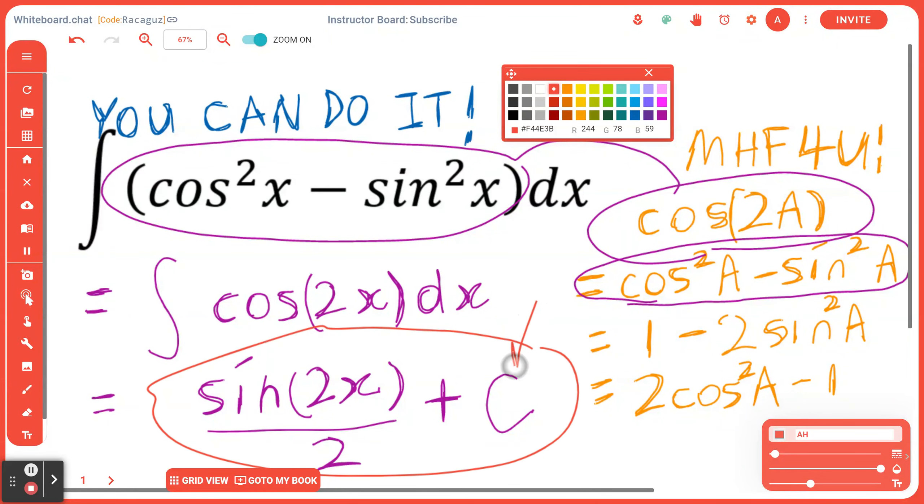When you find the derivative of half times sine of 2x plus C, first the constant becomes zero. If you think about sine of 2x divided by 2, the half goes to the front. When you take the derivative of sine of 2x, that's cosine of 2x times the derivative of 2x, which is 2. Since you have 2 times half, that's 1. This gives you back cosine 2x, which equals cosine square x minus sine square x. I hope this makes sense.